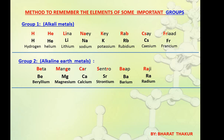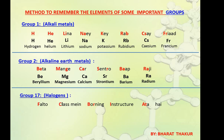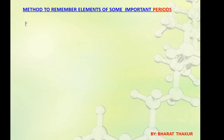The last elements of both these groups, Francium and Radium, are radioactive in nature. Similarly for group 17, that is Halogens, the shortcut is 'Falthu class mein Boring instructor aata hai'. 'Falthu' indicates Fluorine, 'class' indicates Chlorine, 'boring' indicates Bromine, 'instructor' indicates Iodine and 'aata' indicates Astatine. This will help us arrange the elements in the correct order of their respective groups.